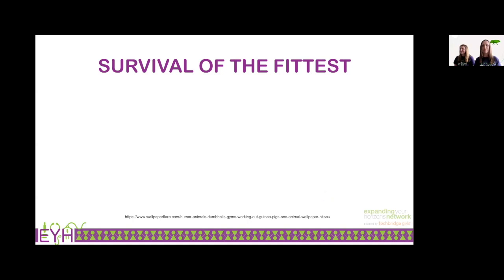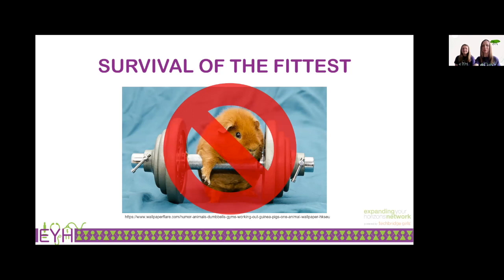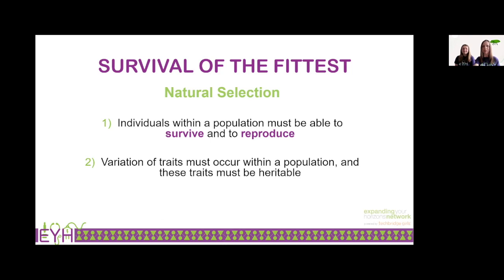Survival of the fittest is a term that most of you are probably familiar with. For some of you, this saying might evoke the thought that only the strong can survive, in which case this strength training guinea pig would be in really great shape. However, this is not the true meaning of the term. Survival of the fittest is another term for natural selection, which was originally described by Charles Darwin in the mid-1800s, and requires two statements to be true: individuals within a population must be able to survive and reproduce, and variation of traits within a population must be heritable.